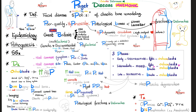On X-ray, findings include bone expansion and cortical thickening due to osteoblastic activity, and sclerotic lesions. A nuclear bone scan is very sensitive for Paget's disease but not very specific — it shows blastic lesions as increased uptake on scintigraphy, but other diseases can look identical on bone scan.